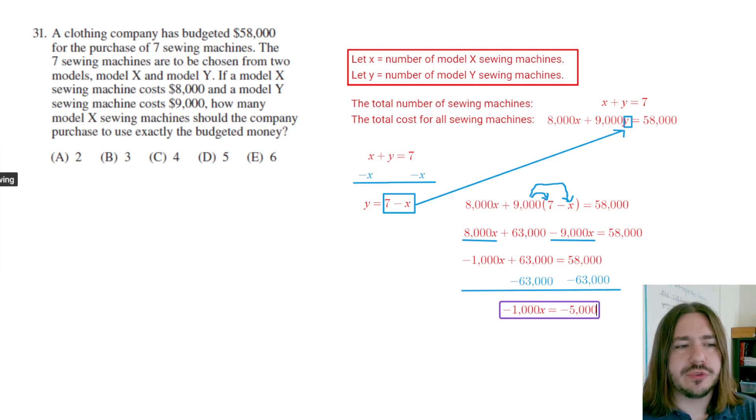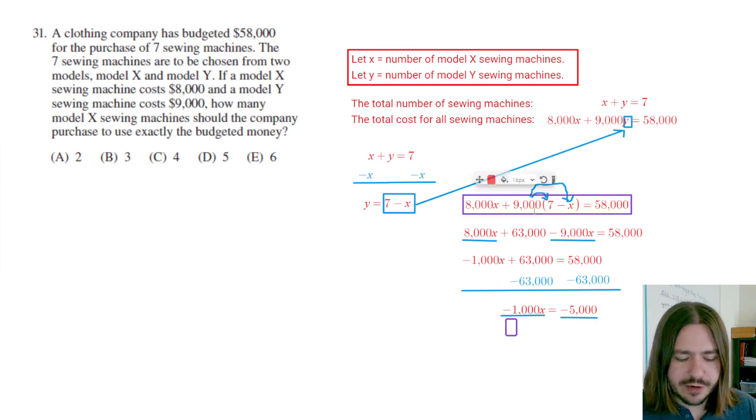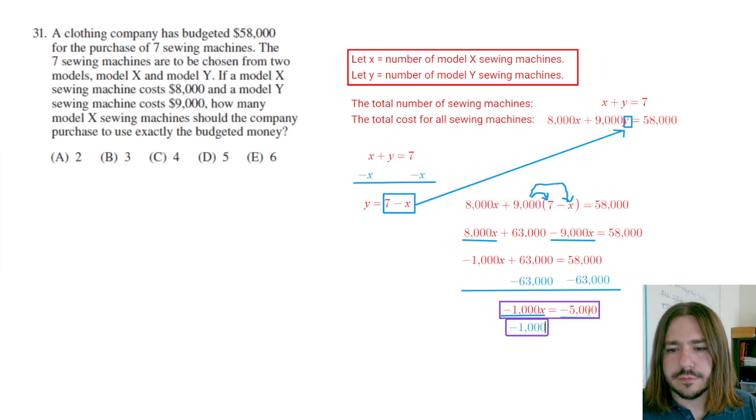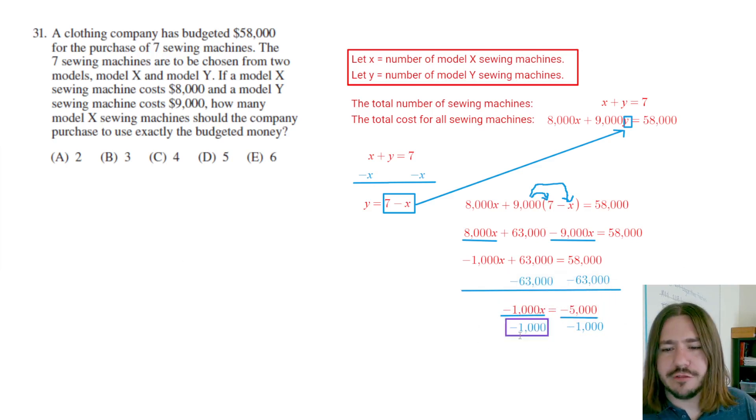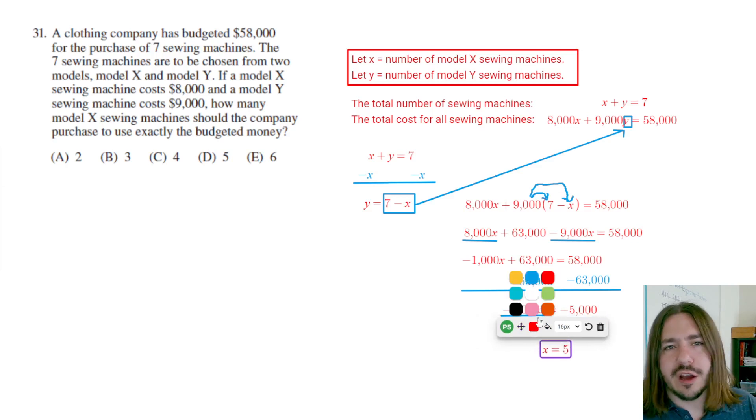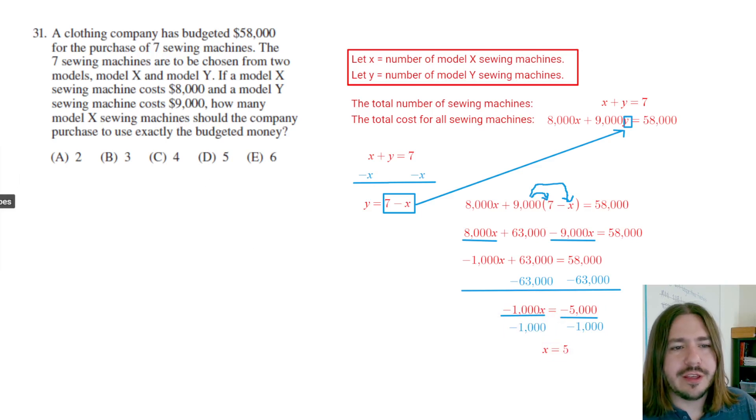The last step here is going to be to divide both sides by negative 1,000. So I'm going to divide both of these sides by negative 1,000, and that's going to give me my final answer here. Negative 5,000 divided by negative 1,000. Here's a case where I think I know the answer here, but don't be afraid to use a calculator if you're not sure, or even if you have just a hint of doubt, but we should get 5. Now, normally when you solve a system of equations, you have to go back and find Y also, but this is just strictly asking for the number of Model X sewing machines. So we have our solution here. It's going to be 5. Our answer is D.